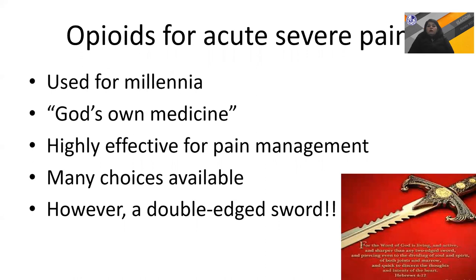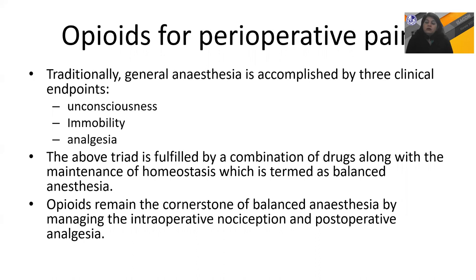We all know that opioids are necessary for acute severe pain, they are highly effective for pain management, and many choices are available. However, opioids are a double-edged sword. Balanced Anesthesia or General Anesthesia is accomplished by three clinical endpoints: unconsciousness, immobility, and analgesia. The triad is fulfilled by a combination of drugs along with maintenance of homeostasis, termed Balanced Anesthesia, and arguably opioids remain the cornerstone and an important component of it.